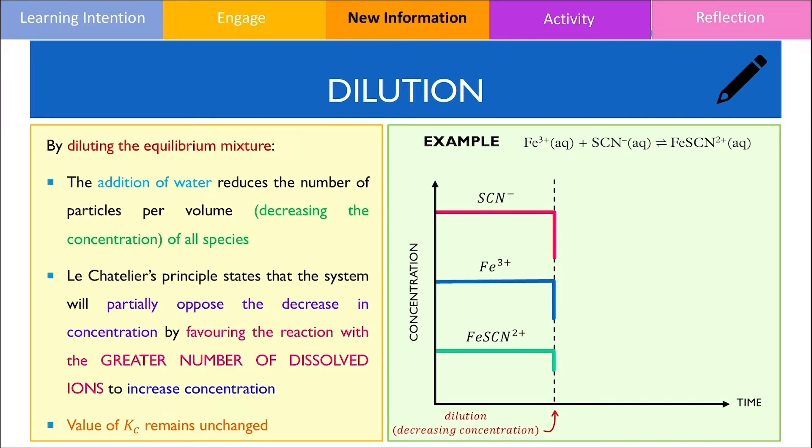Because concentration has decreased, the system will partially oppose by favouring the reaction with a greater number of dissolved ions. In this example, there are more dissolved ions on the reactants, hence equilibrium will shift to the left.